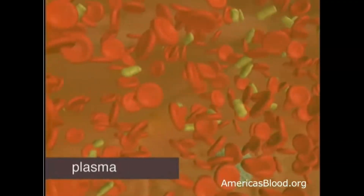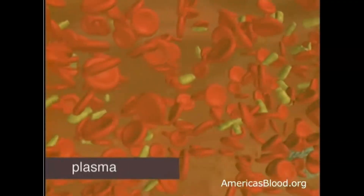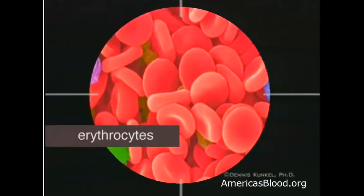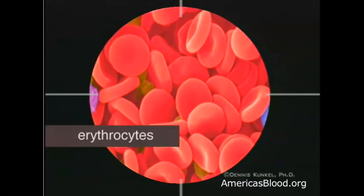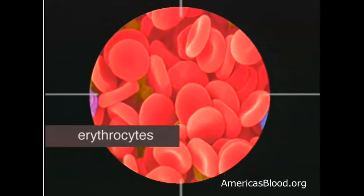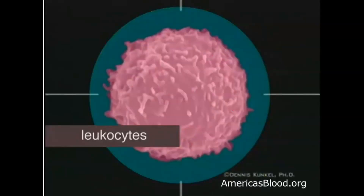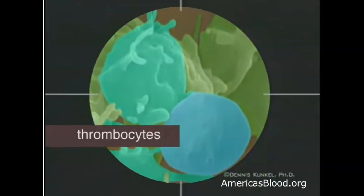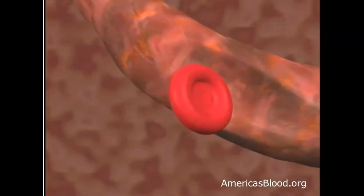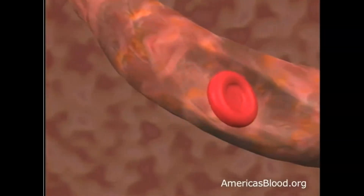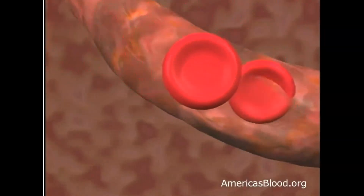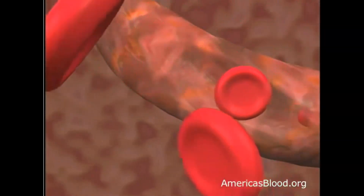The three different types of cells you'll find in plasma are red blood cells, or erythrocytes; white blood cells, or leukocytes; and platelets, or thrombocytes. Red blood cells give the blood its color and make up 40 to 45% of your blood.